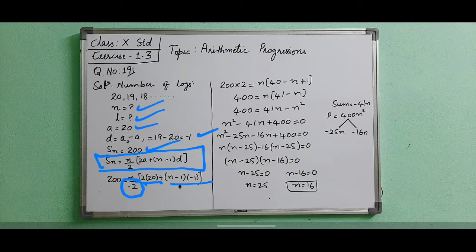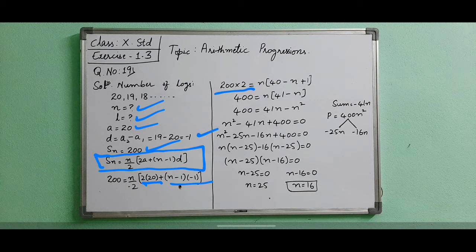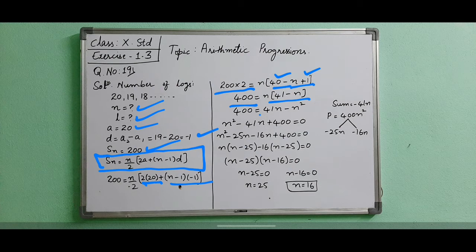The 2 is in denominator. When we shift it comes to numerator. 200 into 2. Then 2 into 20 is 40. Minus 1 multiplied means minus 1 into minus 1 plus 1. Now again 200 into 2 is 400. 40 plus 1 is 41.